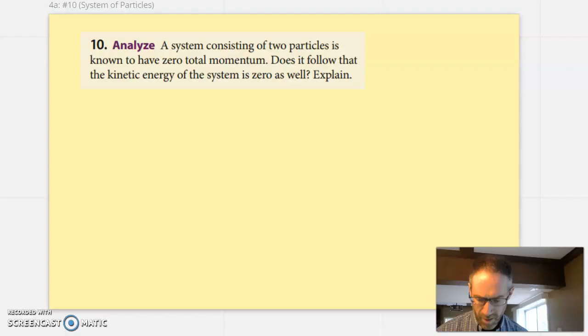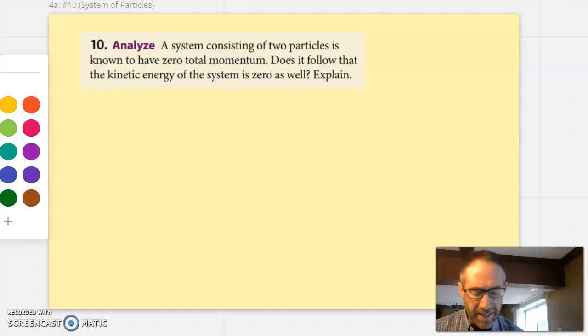First question is number ten, and it talks about a system containing two particles known to have zero total momentum. Does it follow that the kinetic energy of the system is zero as well? Well, it does not, and I can think of two ways that you could have zero total momentum for a system of particles.